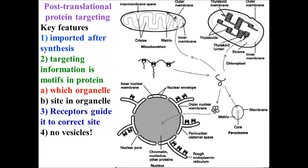Post-translational protein targeting has some key features. First, it is imported after the synthesis. Number two, the targeting information is motifs in protein present within the protein. In the organelles, as well as the site in organelles, the receptor guides to the correct site. The receptor is signaled from the correct site, and no vesicles are formed.